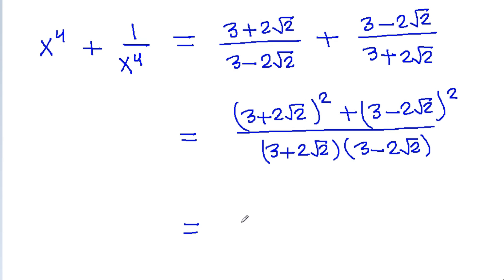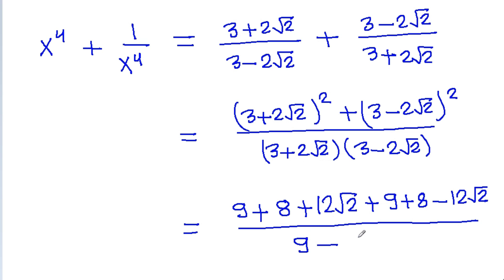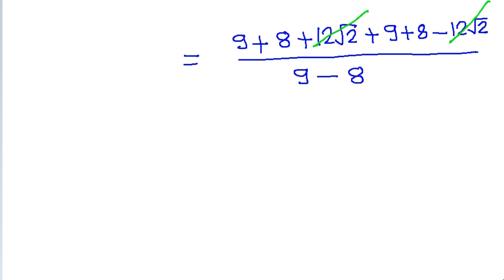Here we get 3 squared is 9, plus 2 root 2 squared is 8, plus 2 times 3 times 2 root 2 will be 12 root 2. We get 9 plus 8 minus 2 root 2, and using the identity (a plus b)(a minus b) is a squared minus b squared, 3 squared is 9 minus 2 root 2 squared is 8. The 2 root 2 terms cancel, and we get 9 plus 8 is 17 and 17 plus 17 is 34, and 9 minus 8 is 1. So x power 4 plus 1 by x power 4 is equal to 34.